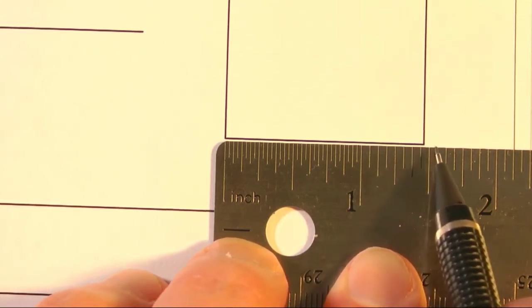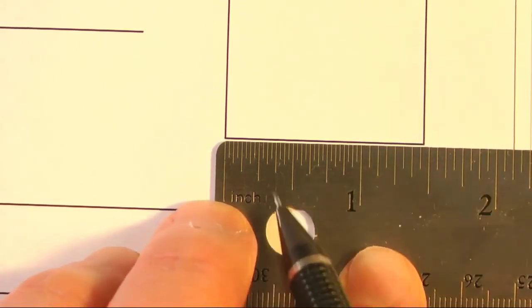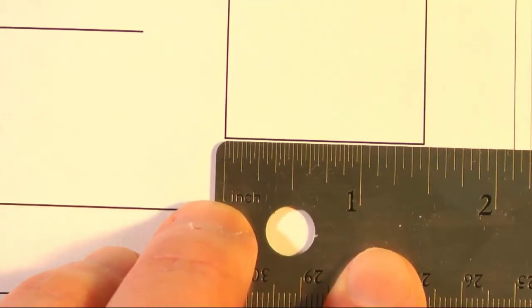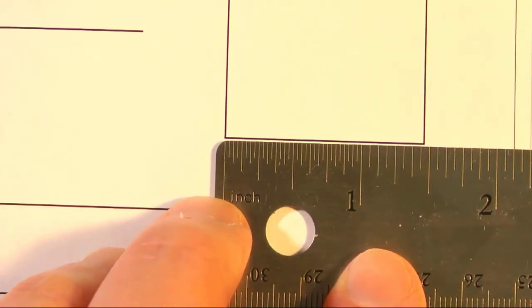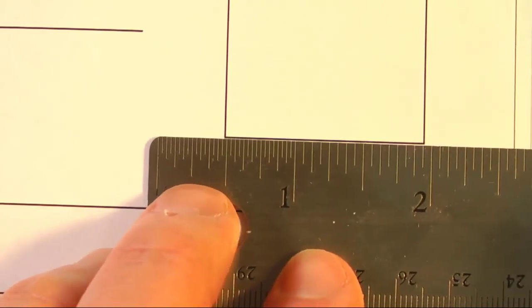But if you can see, it's ever so slightly longer than the seven sixteenths mark. So here we have thirty seconds, they're tiny. So to measure this, what I'm going to do is I'm going to move this over to the two inch mark.